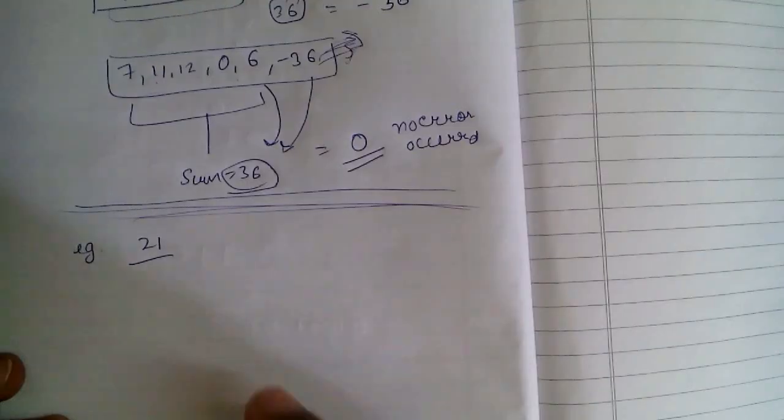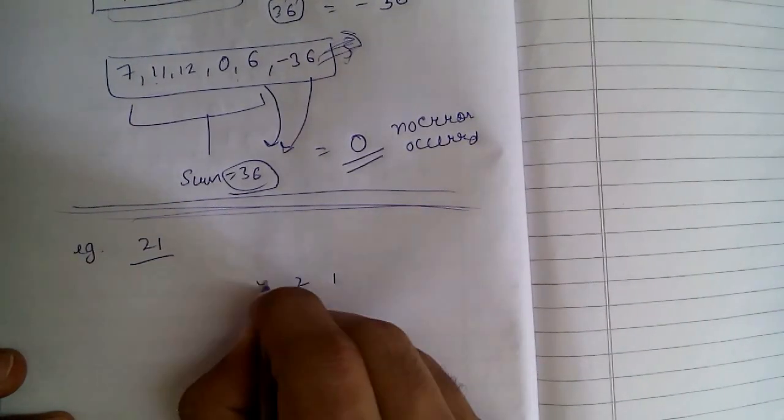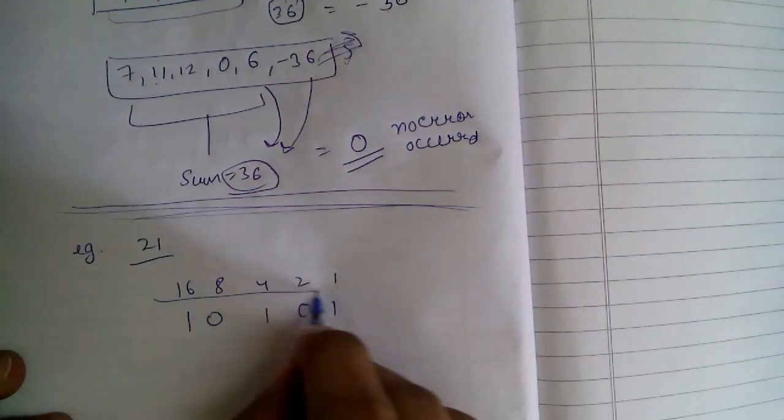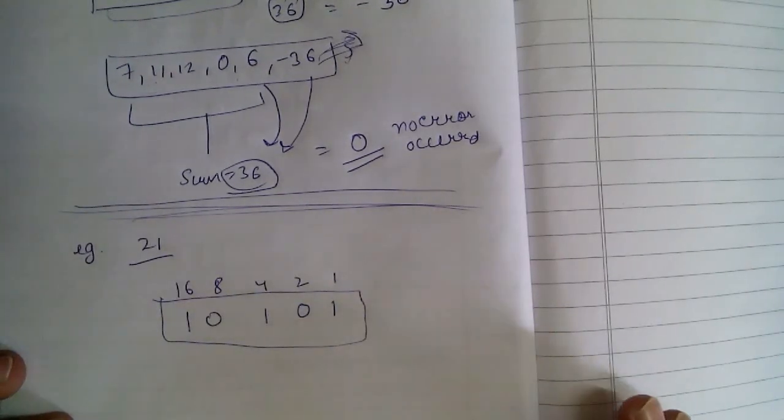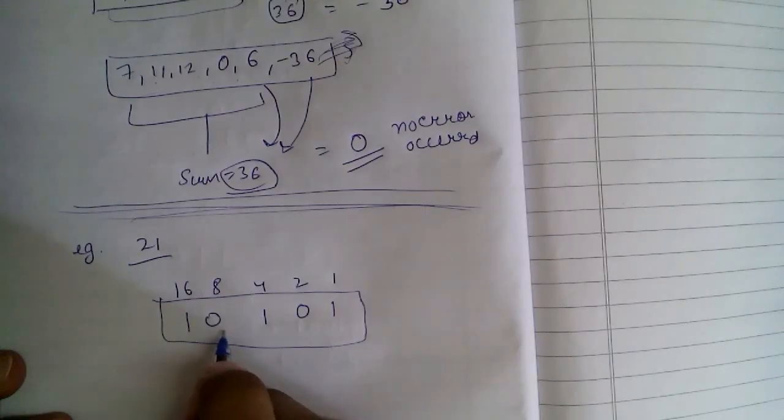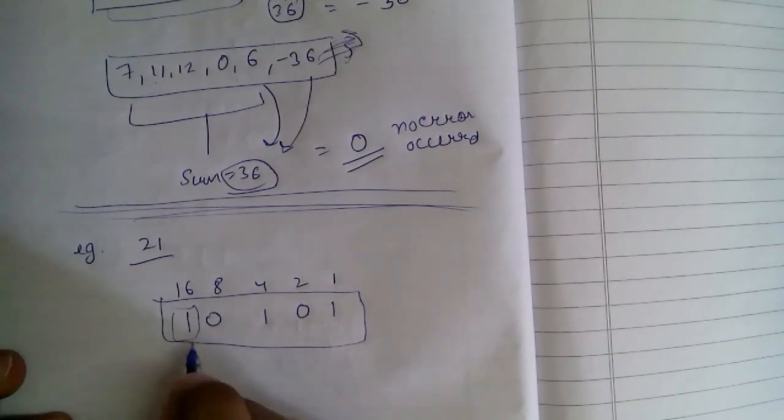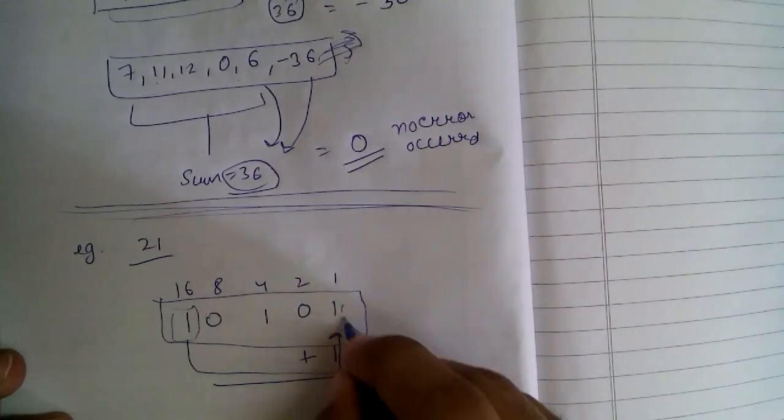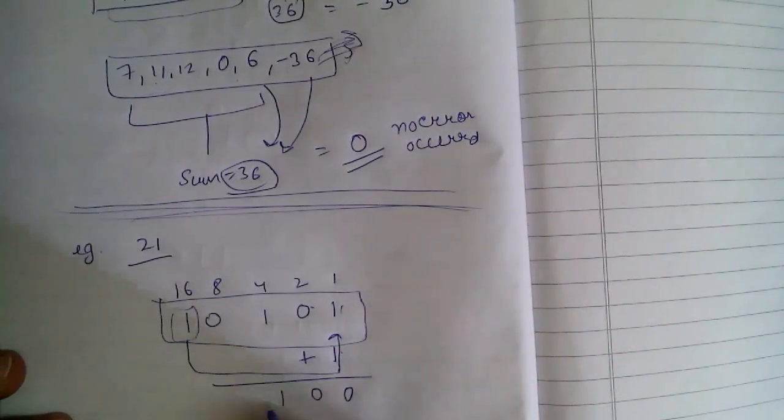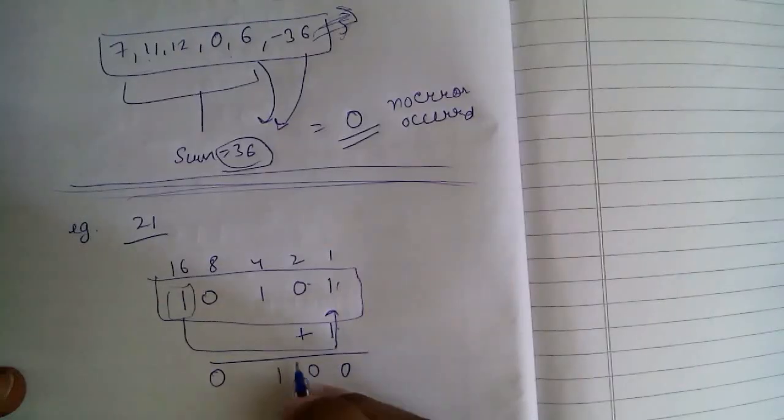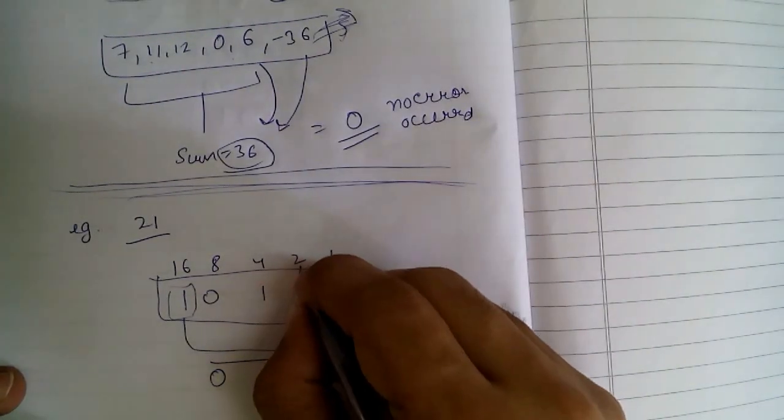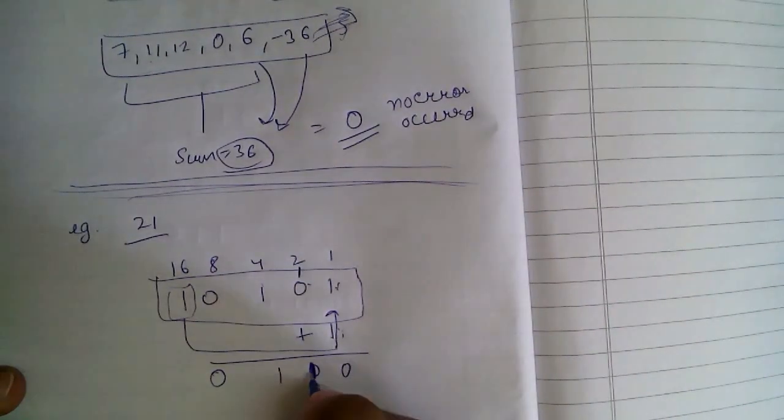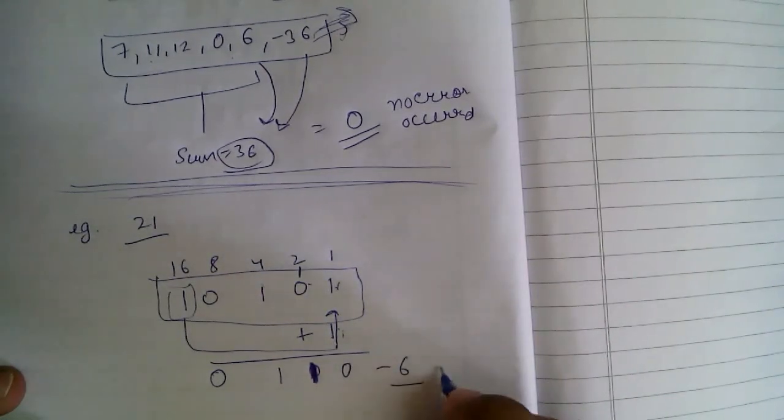21. The binary of 21 is 10101. We just want to represent it in 4 bits, so we wrap this last bit by adding it here. Plus 1, with carry we get 0110. This is 6. This is our sum.